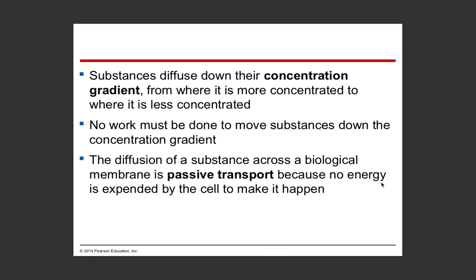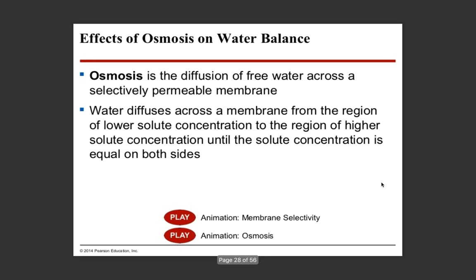Substances tend to diffuse down their concentration gradient - from where there's more concentration to less concentration. No work has to be done; no ATP needs to be hydrolyzed. There is no energy expenditure for substances to move down their concentration gradient - it just naturally flows that way. Think about a bowling ball: you push it up a hill, which requires energy, but then it rolls down on its own. That's passive - no energy utilized by the cell.